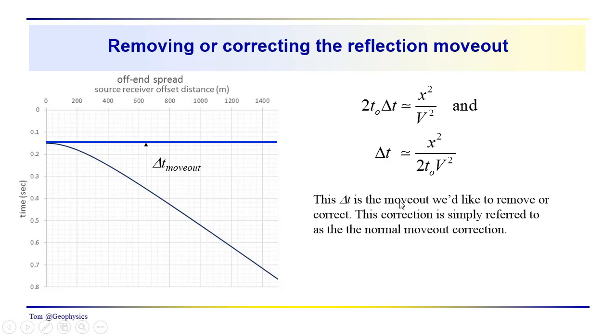So, this delta t, it's referred to as the move out. We'd like to remove it or correct for it. And this correction is often referred to simply as the normal move out correction.